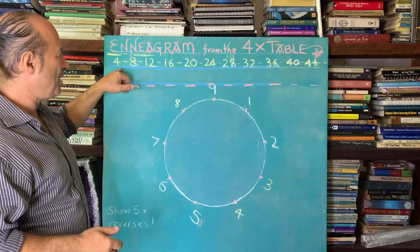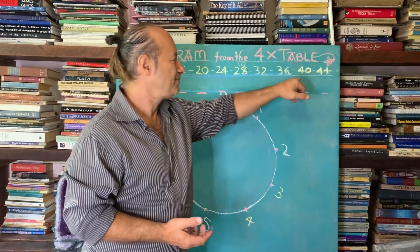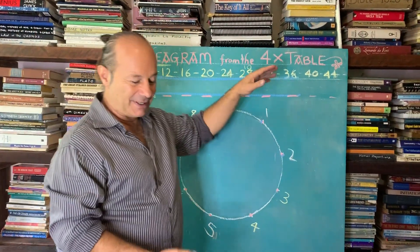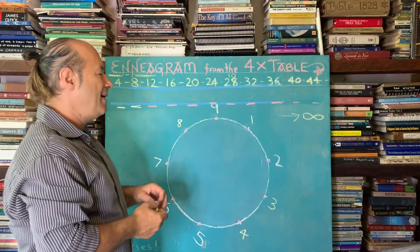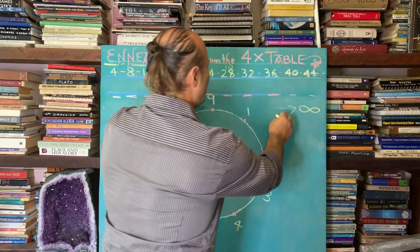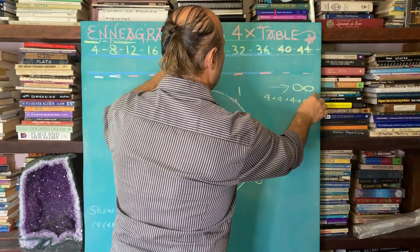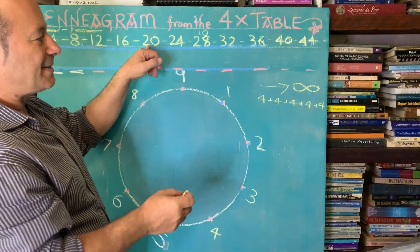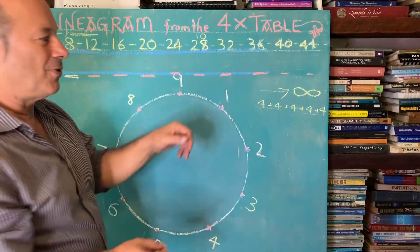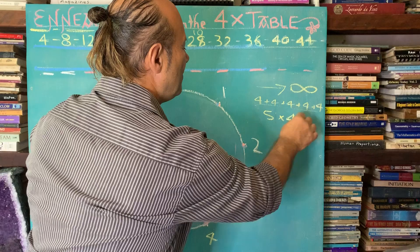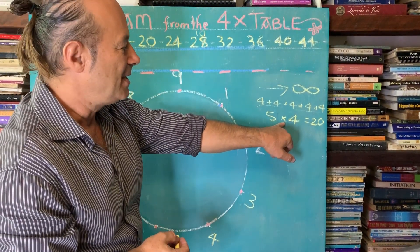We all know the four times table from school: four, eight, twelve, sixteen, twenty, and it goes on. That's an infinite sequence — it goes on forever. Say we want to get to number 20. We know that 20 is four plus four plus four plus four plus four, and that gets really boring. So even though this is addition — five lots of four — we go five times four equals 20. We introduce this multiplication to simplify addition.